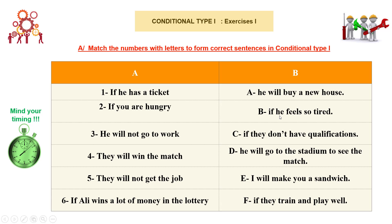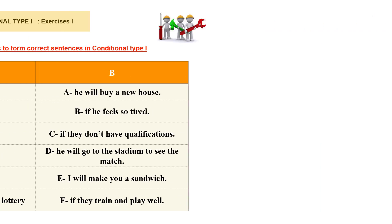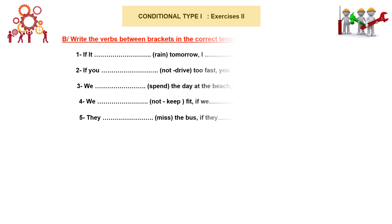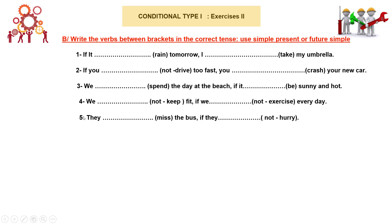For the matching, write which letter corresponds to each number. Moving to the second series of exercises — exercise three — you have a set of sentences with verbs in brackets. The question says: write the verbs in brackets in the correct tense, meaning you use either simple present or simple future. First, read carefully and pay attention to the if clause and the main clause. That will help you choose between simple present and future simple.